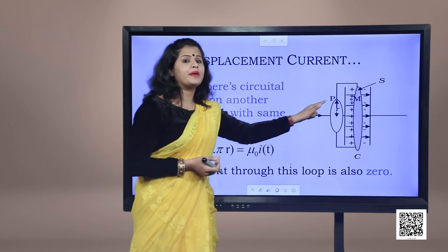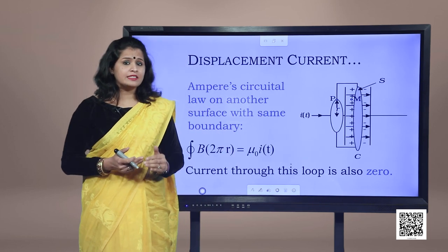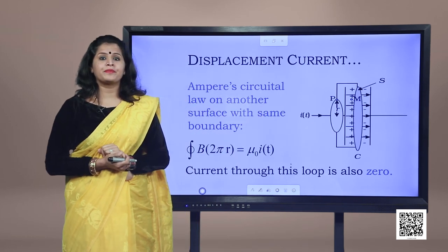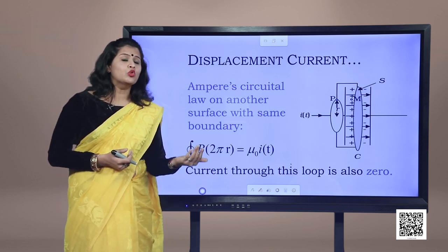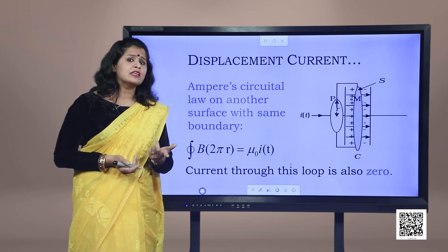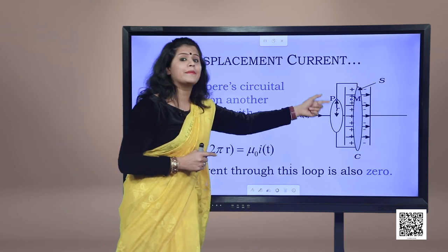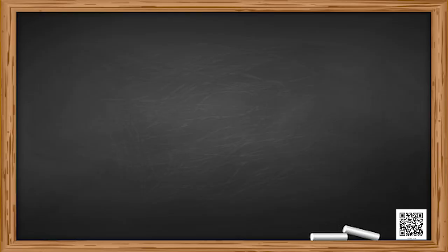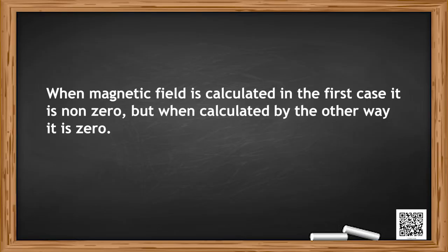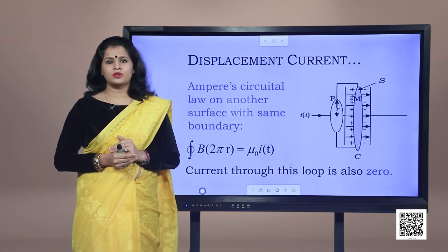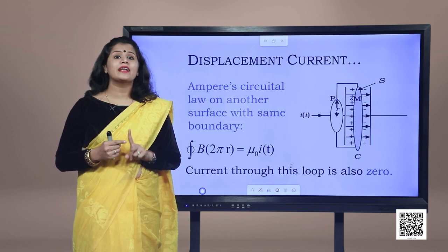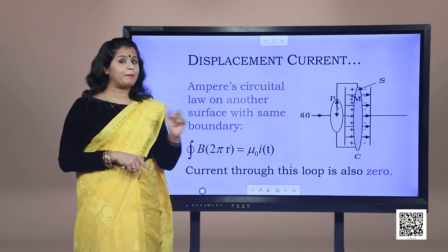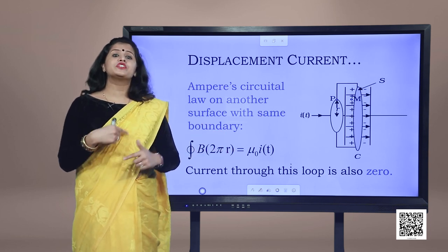With a tiffin-box shaped surface sharing the same circular boundary of radius r, the current passing through it is again zero, which means the magnetic field at point P must be zero. But this is a contradiction: in the first calculation the field is non-zero, and in the second it is zero. There must be a missing term — one that gives the same magnetic field at point P regardless of the type of surface chosen.